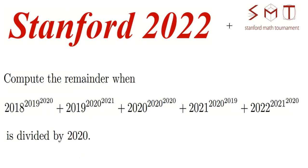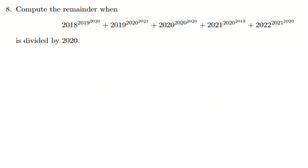Stanford 2022 Math Tournament: compute the remainder when this term is divided by 2020. To solve this problem you should know congruences and the Euler totient function.